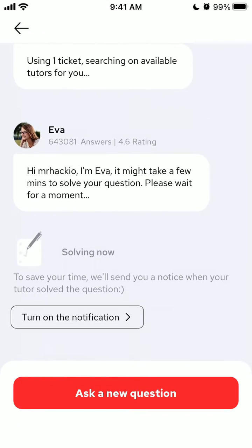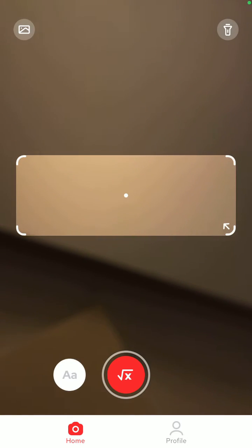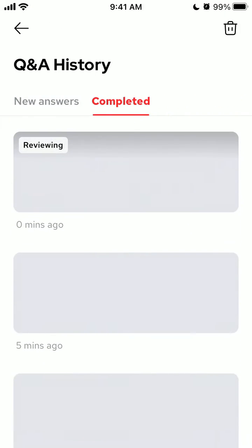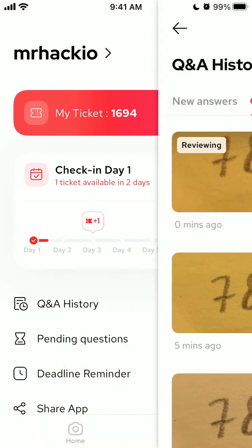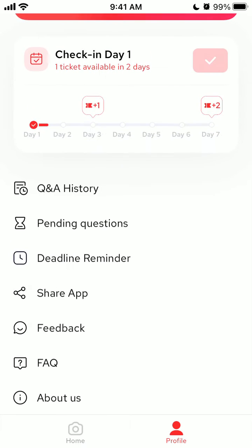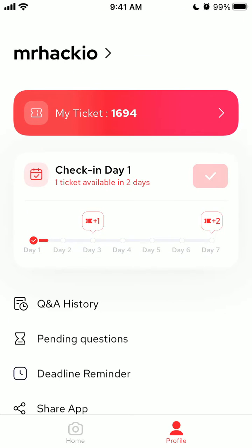So there you have it. Then I can ask a new question. I will see questions here in the Q&A history and I will get a notification. So that's how you can use a ticket.